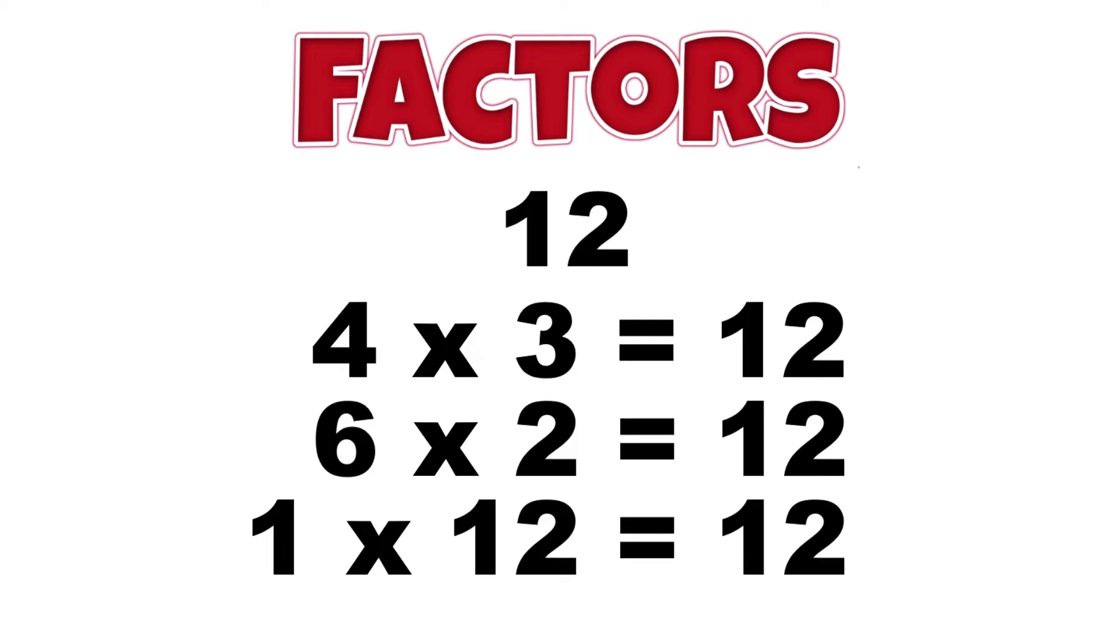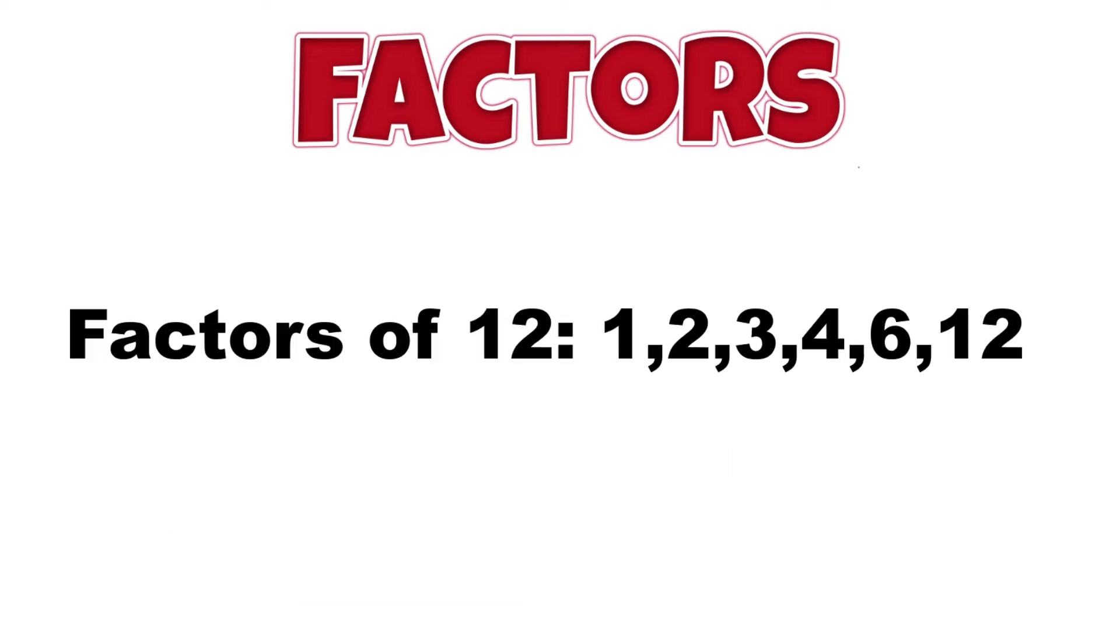Finally, 1 times 12 equals 12, so both 1 and 12 are included in our list of factors of the number 12. It is standard practice to list all the factors of a number in order from least to greatest.